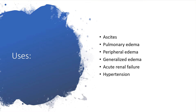Uses of furosemide include ascites secondary to liver cirrhosis, pulmonary edema, and any heart failure situation with fluid accumulation in the cell space or abdomen. It is also used for pulmonary edema, peripheral edema, generalized edema (anasarca), acute renal failure, and of course hypertension.